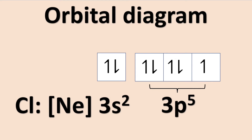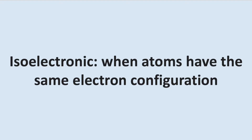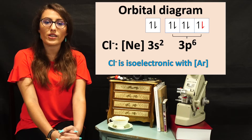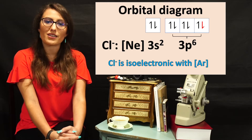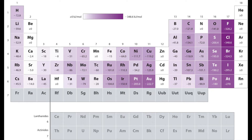In the case of chlorine, if it accepts an electron, it will have the same electron configuration as that of a noble gas, making this a stable configuration. When an atom has the same electron configuration as another atom, this is called isoelectronic. Chlorine is isoelectronic with argon when it accepts an electron, whereas in the case of sodium, it does not become isoelectronic with a noble gas. With this in mind, we would expect chlorine to have a more negative electron affinity than sodium, because chlorine, upon accepting an electron, has a completely filled shell.